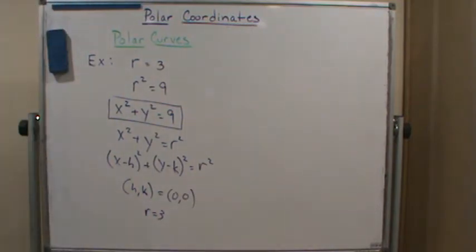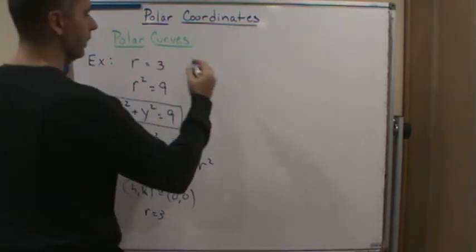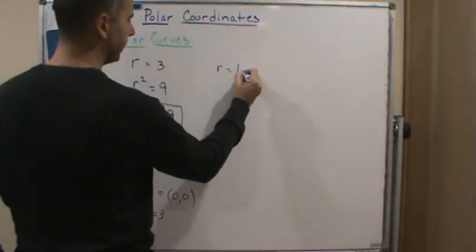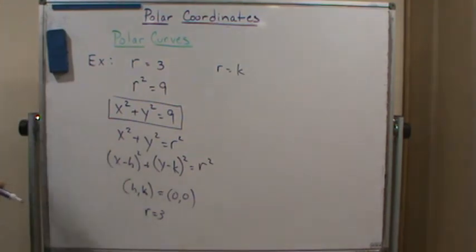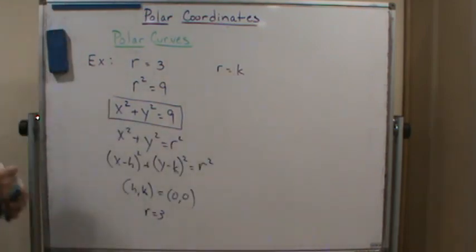And we're done. In fact, all equations of this form where we have r equals k is going to be a circle centered at the origin with a radius of k. That was easy, right?